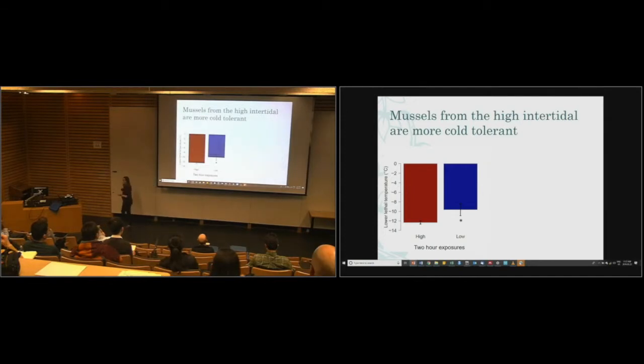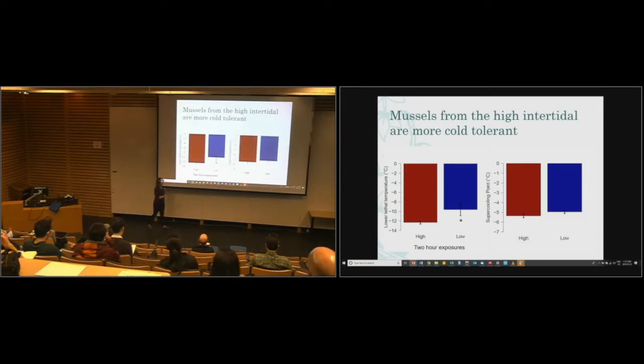Let's start off. Are mussels from the high shore position more freeze tolerant? Definitely so. Here they can survive down to about minus 12 on average, where mussels from the low shore position down to minus 9. So that's a pretty significant amount of difference in cold tolerance, given that we're talking a few feet walking distance on the shore. That's nice to see, and it doesn't seem to be mediated by supercooling points. They freeze at exactly the same temperature.